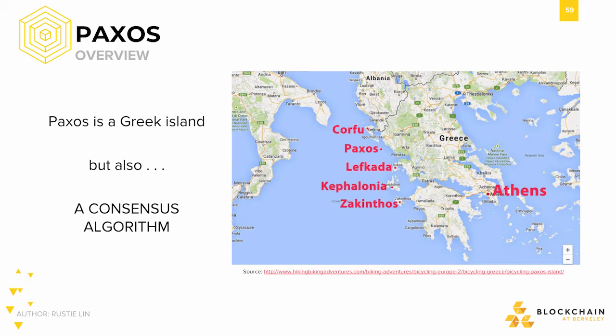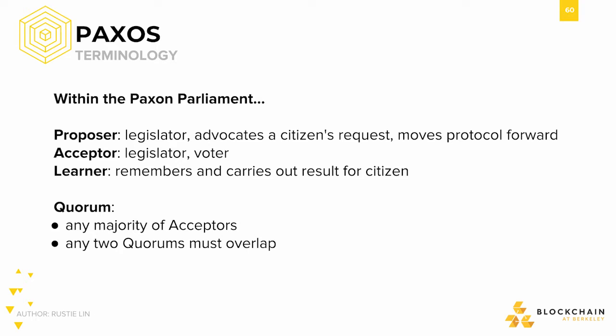The paper specifies that within the Paxon Parliament there are three types of legislators: proposers, acceptors, and learners. Proposers champion the request of citizens and bring up new bills to others in the Paxon Parliament. Acceptors are legislators that vote, and after consensus is reached, learners learn the result of the consensus and carry out the bill. In order for consensus to be reached, a majority of acceptors must vote for a new bill — we call any majority of acceptors a quorum. A key observation is that any two quorums must overlap. The idea of quorums is also very important in other consensus algorithms, such as those considered federated consensus algorithms.